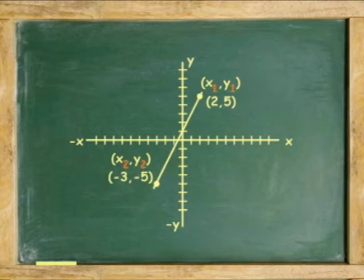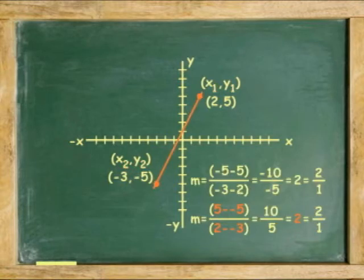Doing it backwards, you get the same result. 5 minus -5 equals 10 over 2 minus -3 equals 5. 10 divided by 5, you still get 2.